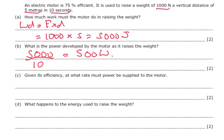Given the efficiency, at what rate must power be supplied to the motor? Well we know the power supplied times by its efficiency, which is 0.75, is 500. So the power going in is going to be 500 divided by 0.75.